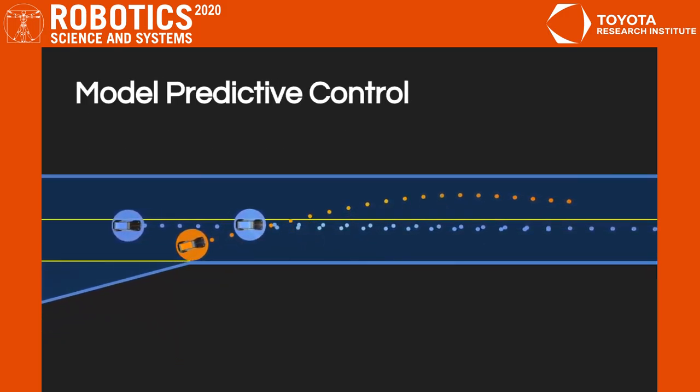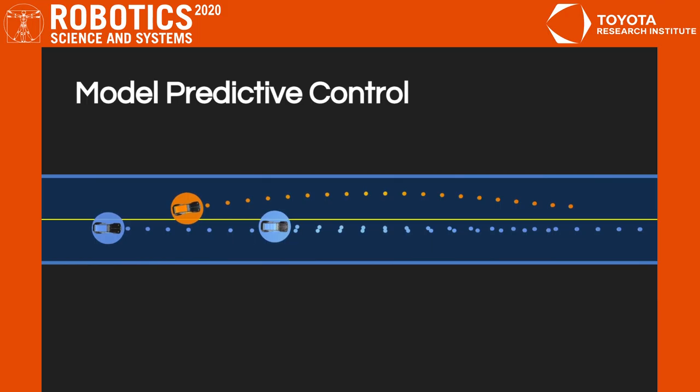We implement a model predictive controller, which executes ALGAMES in a receding horizon loop. For a three-agent scenario, our controller reaches an update frequency higher than 60Hz.